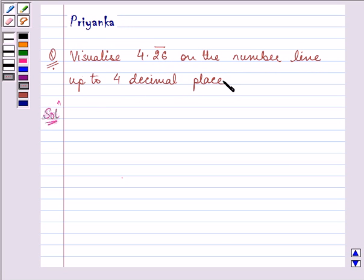Now first of all let us write 4.26 bar up to 4 decimal places. That will be 4.2626.